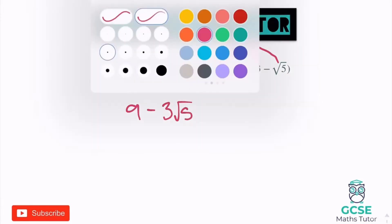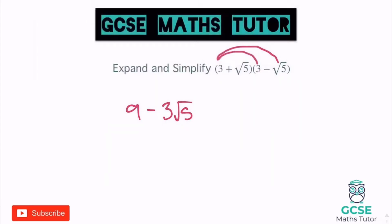Then I move on to the next one. Root 5 times root 3 makes plus 3 root 5. And the final one — root 5 to the root 5 — it's a positive root 5 times a negative root 5, so my answer's going to be negative. It makes root 5 squared, which simplifies down to 5, so it's minus 5.